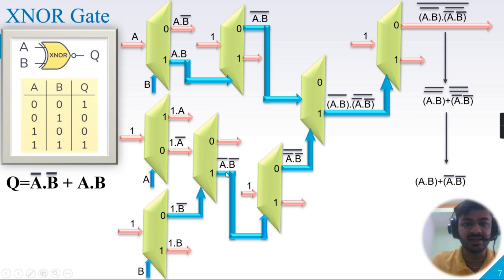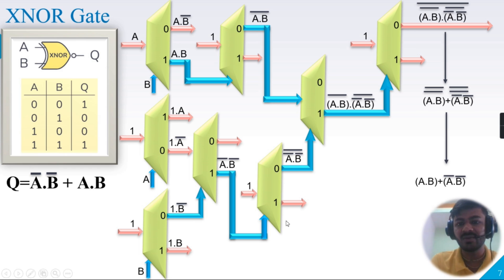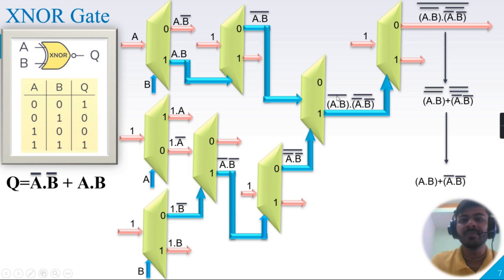The sixth demux uses Q1 output (A-bar AND B-bar) of the fourth demux as the select line, with 1 as input. We need Q0 output only: Q0 equals 1 AND (A-bar AND B-bar)-bar, which by identity law is (A-bar AND B-bar)-bar.